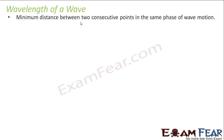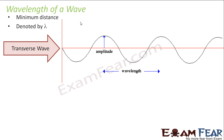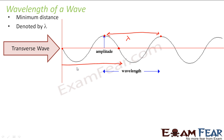What is wavelength of a wave? It is the minimum distance between two consecutive points in the same phase of wave motion, generally denoted by lambda. If you take any two points which are in the same phase, the distance between these two points is lambda. So the distance between any two points which are in the same phase is known as the wavelength of a wave.